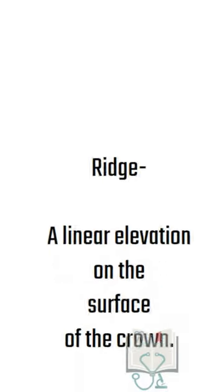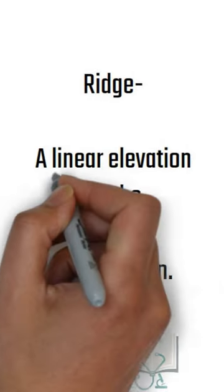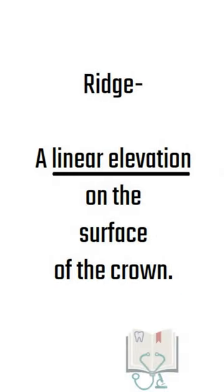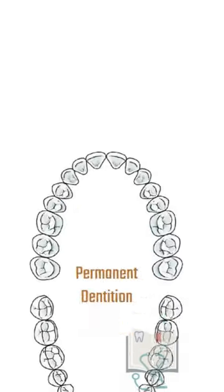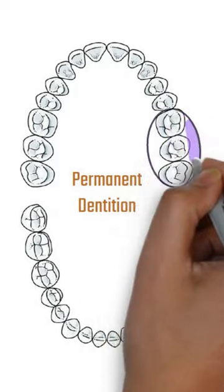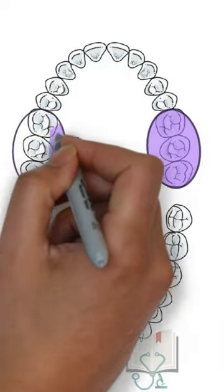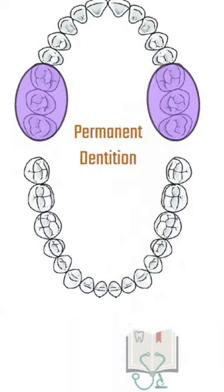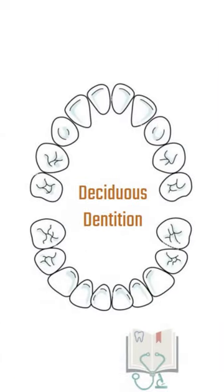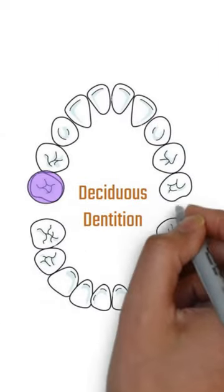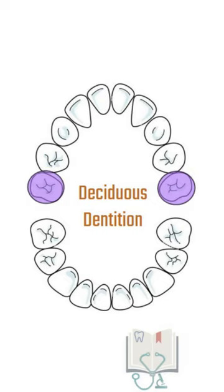Oblique ridge is a type of linear elevation which, in permanent dentition, is present in all three maxillary molars, and in deciduous dentition, in the maxillary second molar.